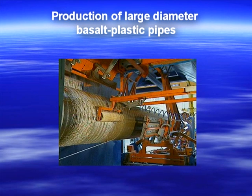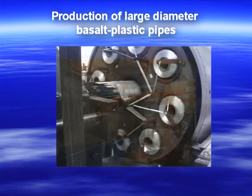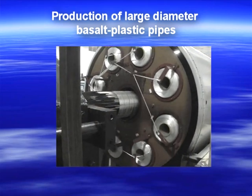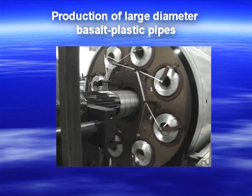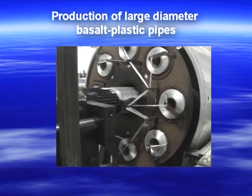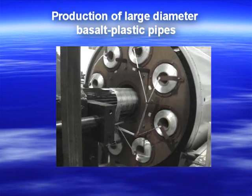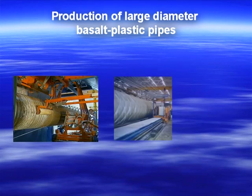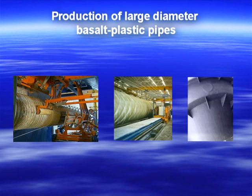Production of large diameter basalt plastic pipes: manufacture of basalt plastic pipes of big diameter, tanks and pressure vessels using the method of continuous spooling results in production of durable, lightweight, chemical-resistant structures and products.